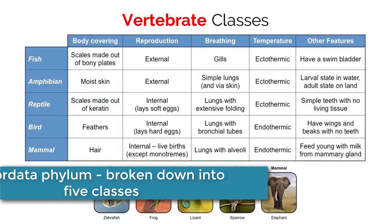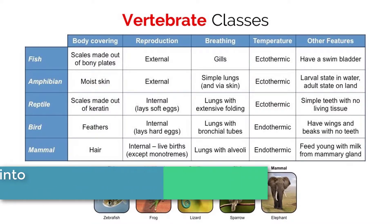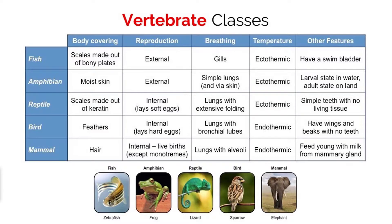The seventh phylum is Chordata, which contains all vertebrate animals. We can break down the Chordata phylum into five different classes: fish, amphibians, reptiles, birds, and mammals. Review the characteristics and make sure you can distinguish between these five vertebrate classes for the IB exam.